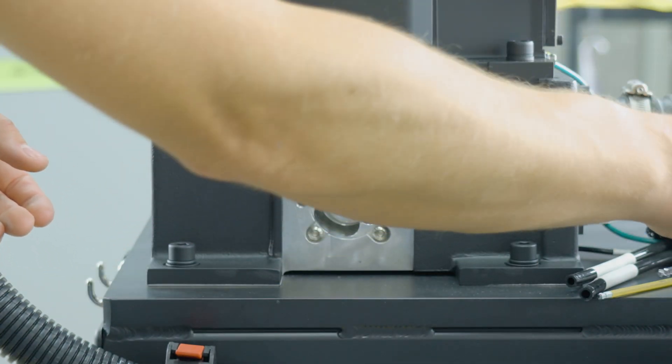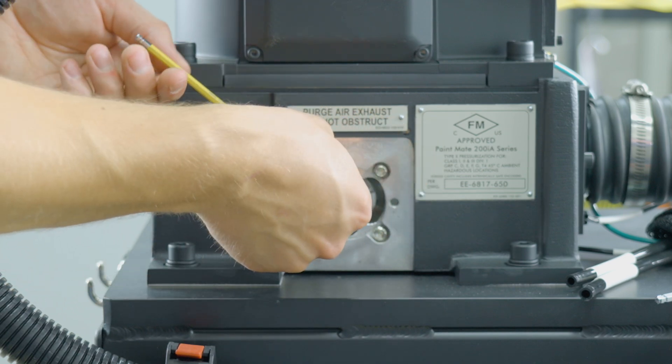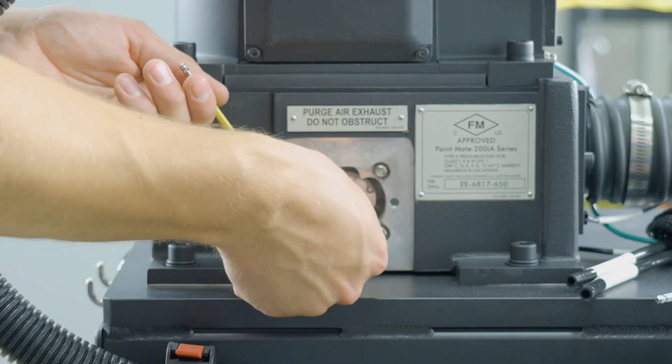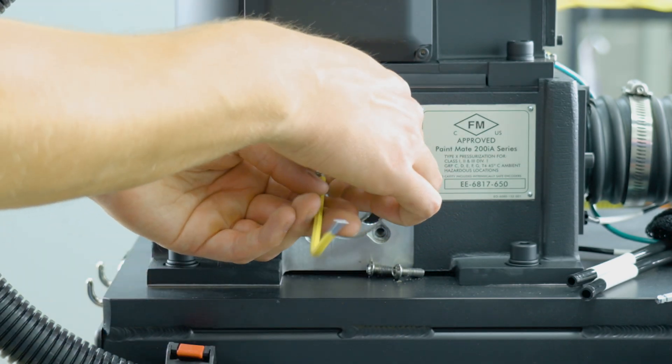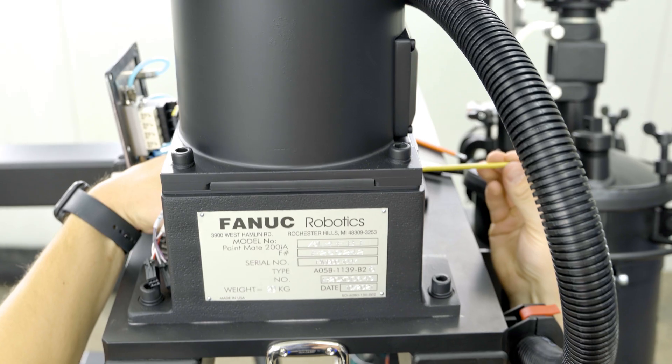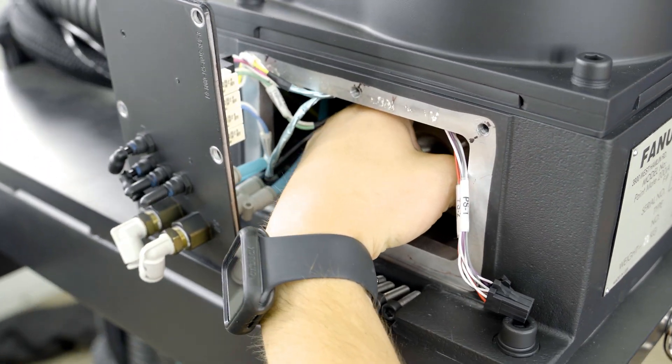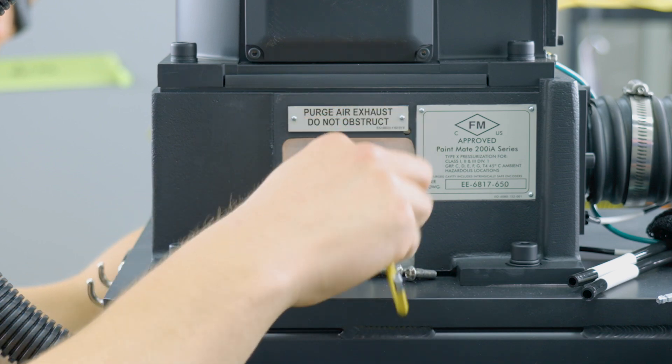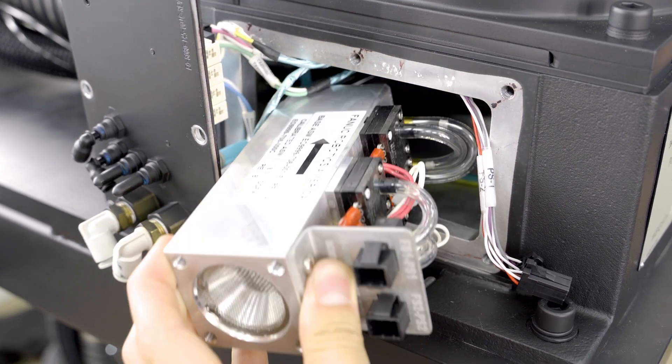Carefully set the clamshell aside and use a 4 millimeter allen wrench to begin removing three of the four screws that retain the purge switch in the robotic housing. Support the purge switch while removing the final bolt. Beware of loose wires when removing the switch from the housing.